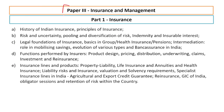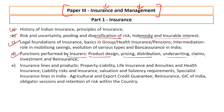In insurance — paper three, insurance and management — it is divided into two parts: insurance and management. The static portion of insurance covers the history of Indian insurance, risk and uncertainty, pooling, diversification of risk, indemnity, insurable interest, legal foundation of insurance, functions performed by insurers, product design, pricing, distribution, underwriting claims, investment, reinsurance, insurance lines and products, product liability, life insurance, annuities, health insurance and liability risk. Also agriculture and export credit guarantee, reinsurance, GIC of India, obligatory cessions and retention of risk within the country.